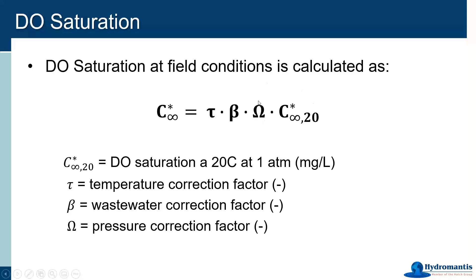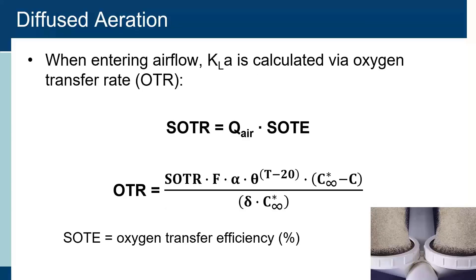We take that number and multiply it by three correction factors: correction for temperature, the wastewater beta factor — which is a function of other components in the wastewater that we're not explicitly modeling, a fudge factor to account for salts and other things — and then the pressure correction factor, so if we're working at high or low pressure, we can adjust it up and down. Now we know the highest concentration that we could possibly get in the liquid under these conditions, and now we're going to let the model figure out how much oxygen transfer is going to happen, knowing what the saturation level is.